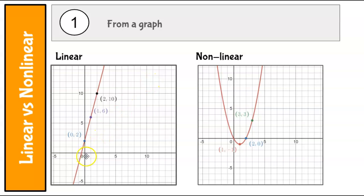It doesn't have to go through (0,0) to be linear. It does have to go through (0,0) to be proportional, but not linear. Linear can be any straight line. This is nonlinear because it's a curve. It's not a line.